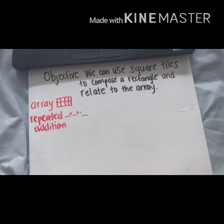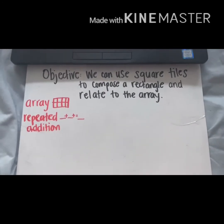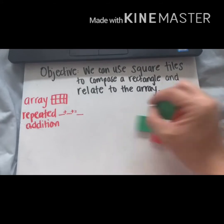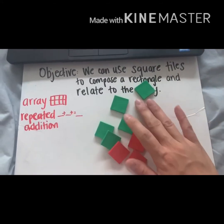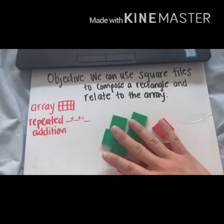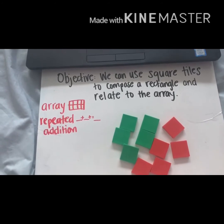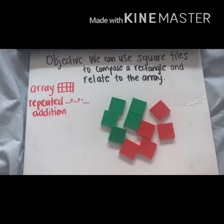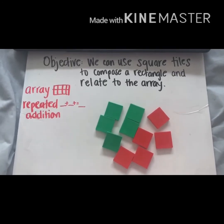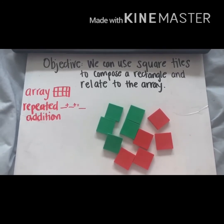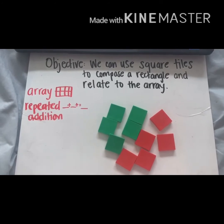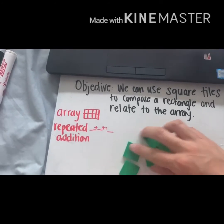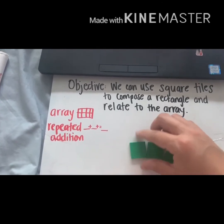All right, let's do our first practice. We're gonna have ten tiles — you'll see them right here, they're red and green. We're gonna place these ten tiles into two equal groups, organizing them into two equal rows like we've done before, but this time we're not gonna leave spaces between the rows. So here we go.